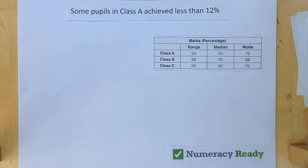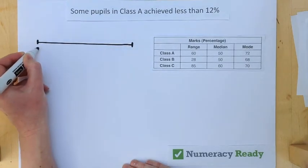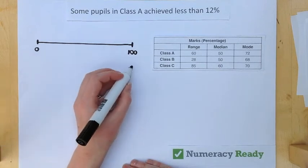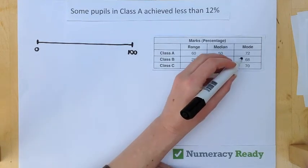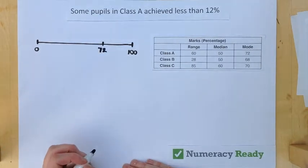Let's start with Statement A. Some pupils in Class A achieved less than 12%. The easiest way to think about this is the fact that on a scale of 0 to 100%, the mode says that this mark was gained by some of the students.